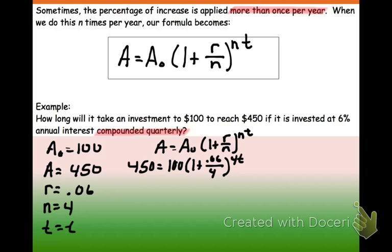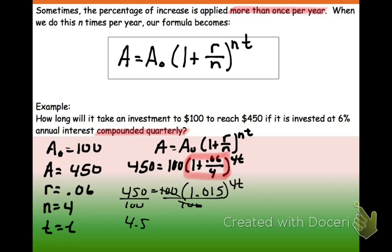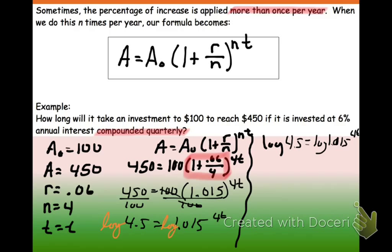We are going to have $450 equals $100 times 1 plus 0.06 over 4 to the 4t. Again, very similar to the last problem, where right away we want to go ahead and add these together. So we'll have $450 equals $100 times, if you put that all into your calculator, you'll get 1.015 to the 4t. Divide by our $100. So you have 4.5 equals 1.015 to the 4t. And now again, we want to go ahead and take our log. So log of this side, log of this side. And that will be log 4.5 equals log 1.015 to the 4t. Power rule says we can take this and bring it down in front.